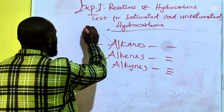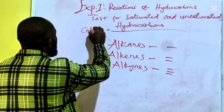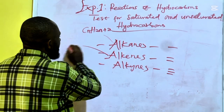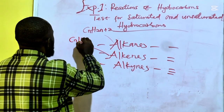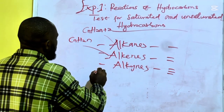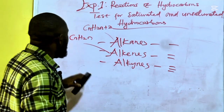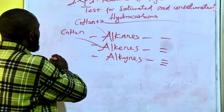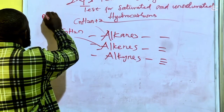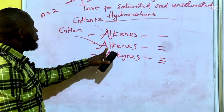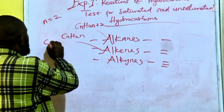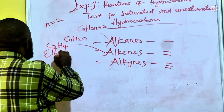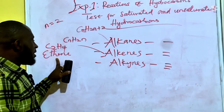Alkanes have a general formula of CnH2n+2. Alkenes have a general formula of CnH2n. When N is equal to 2 for alkenes, this becomes C2H4, which is ethene.